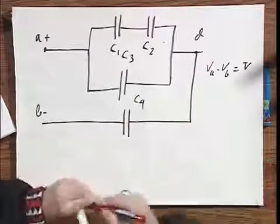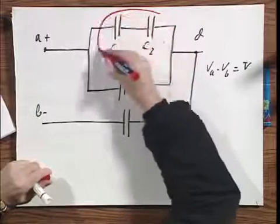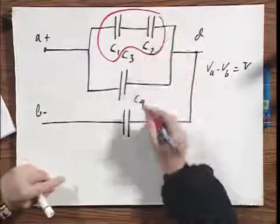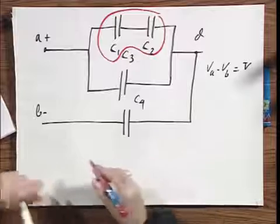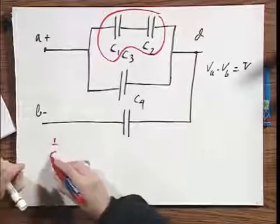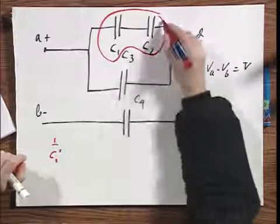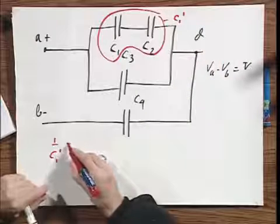The first thing I'm going to do, I'm going to replace these two by an equivalent capacitor. One over C1 prime, equivalent capacitor would be C1 prime, equals one over C1 plus one over C2.